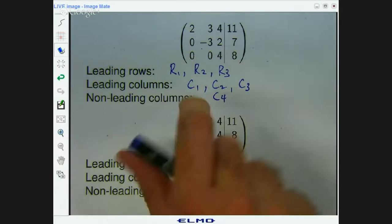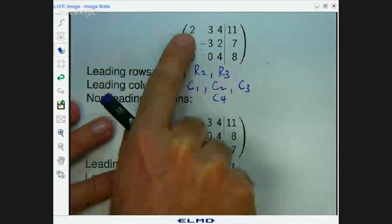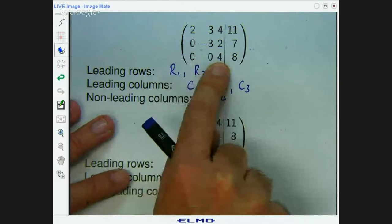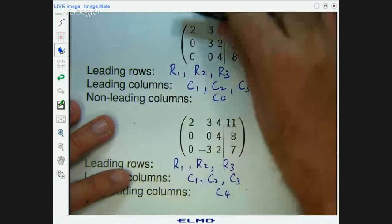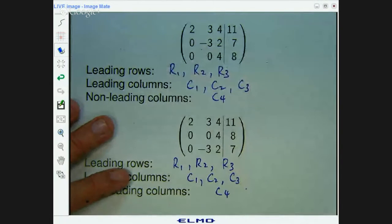First of all, none of the rows are zero. So they're all leading rows. There's the leading entry of row one. There's the leading entry of row two. There's the leading entry of row three. And we're moving down, as we go down, our leading entries are moving to the right. So that's definitely row echelon form.